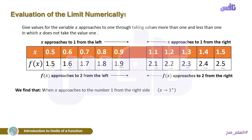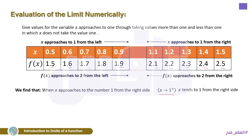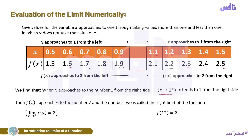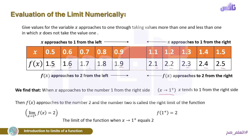When x approaches the number 1 from the right side, we find that f(x) approaches the number 2. The number 2 is called the right limit of the function. This is written as: the limit of f(x) as x tends to 1 from the positive side equals 2.